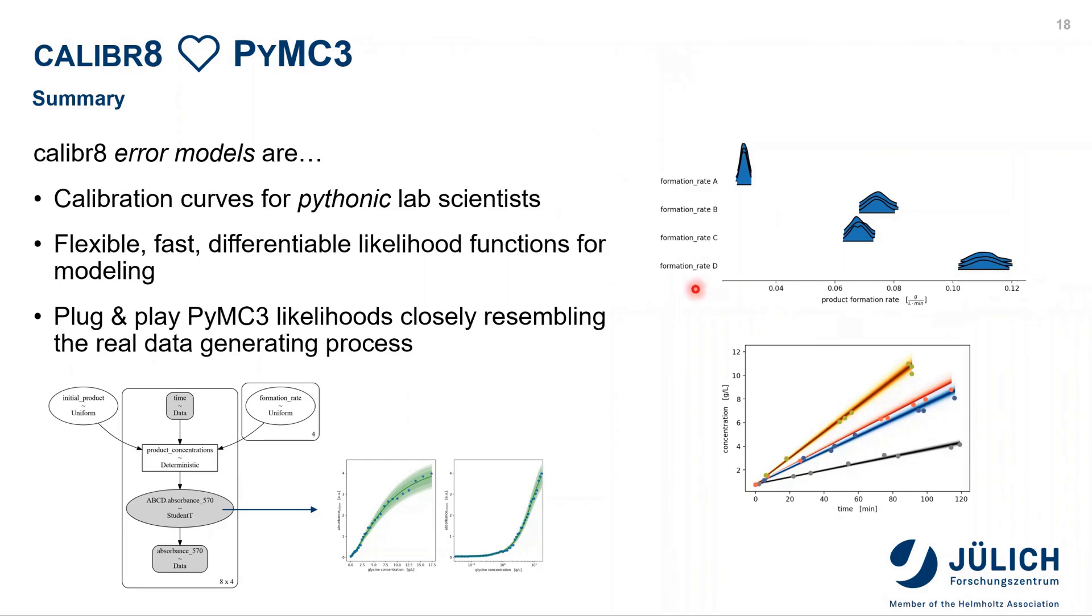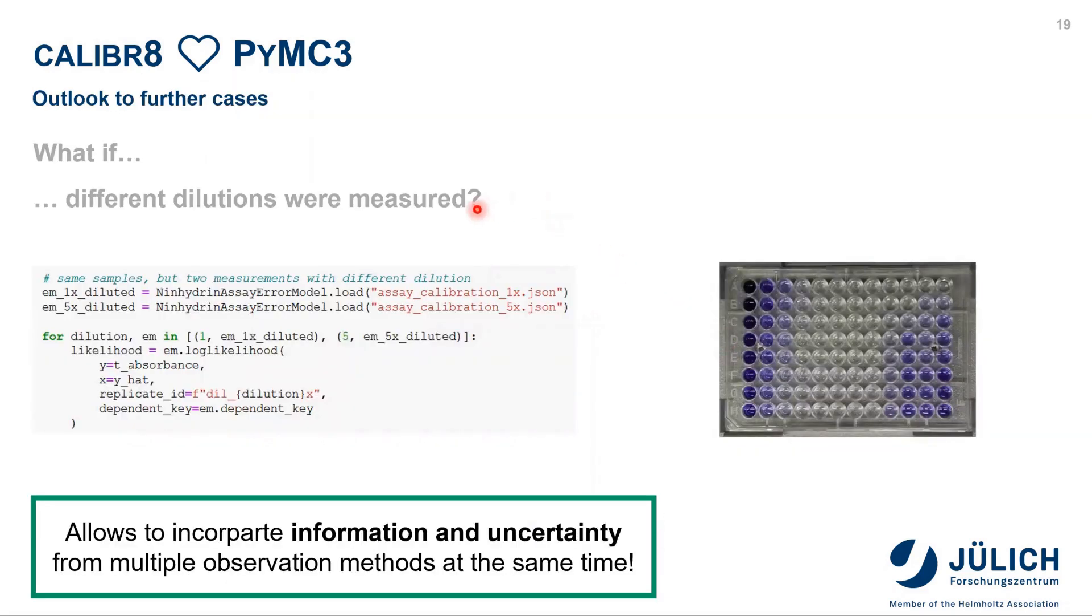Coming back to the thought example we had at the beginning, from those four different candidates, one was clearly the best concerning product formation rate. Although we faced several nonlinearities in the measurement of absorbance, we could easily handle this because we used an error model for this calibration. Of course, this kind of kinetics was a fairly easy example, so let's get a bit beyond this and see what else we could do using error models. Another common example would be that we don't measure just one dilution, but maybe several. What we could do to handle this would be to simply set up two different error models and calibrate them with standards for both dilutions, and then we could plug in both into our process model by using two different likelihood methods. This allows us to incorporate both information and uncertainty for multiple different observation methods at the same time, which is very nice for our analysis.